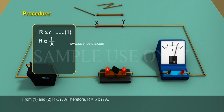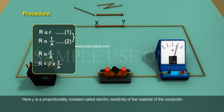From 1 and 2, R is proportional to L by A. Therefore, R equal to ρ into L by A. Here ρ is proportionality constant called electric resistivity of the material of the conductor.